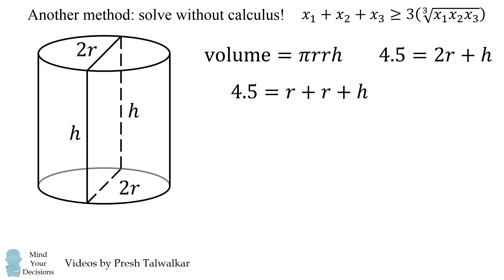So, here we have the sum of three variables, and by the AM-GM inequality, this has to be greater than or equal to 3 times the cube root of the product of these three variables. We can then divide both sides by 3, and then cube both sides to get 1.5³ is greater than or equal to r times r times h.